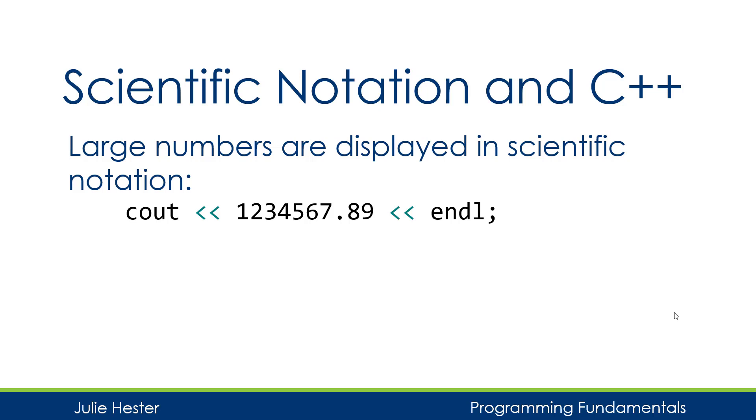So if I wanted to display this floating point literal, I'm not even writing it in scientific notation. It's not stored in a variable. If I want to write the number 1234567.89 on my console window or display, by default, C++ is going to write the number like this or display the number as 1.23457e+06, meaning 10 to the sixth power.